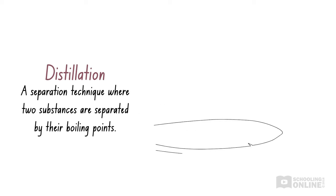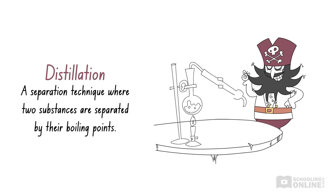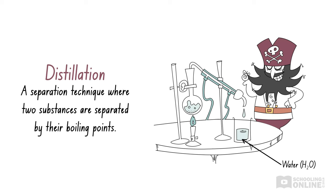Here, Blackbeard could heat the salty water, then condense the steam in another container to get pure water. When steam is condensed, it changes state from gas to liquid. Blackbeard would be left with solid salt crystals in the original container since they don't evaporate.